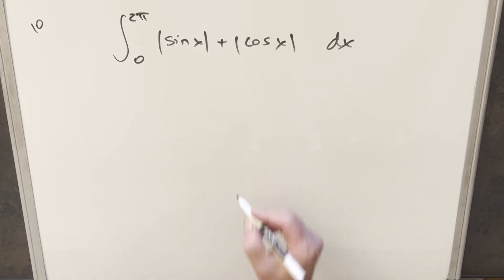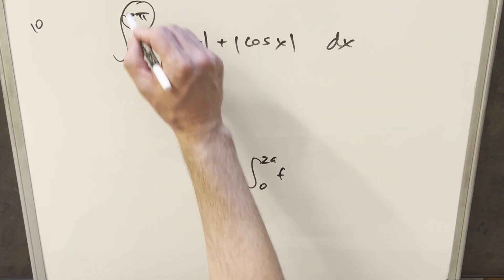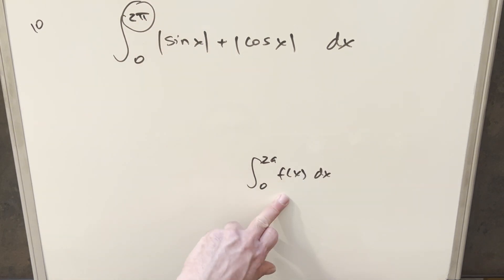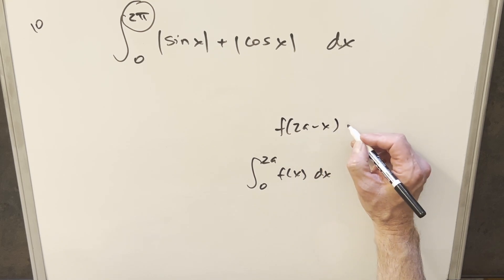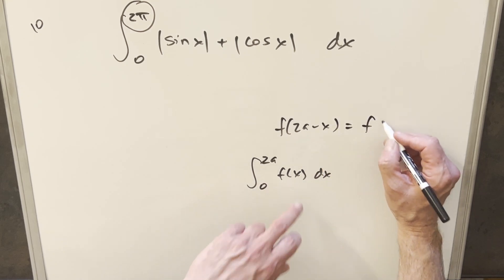So what I want to do instead is use this principle of integration where if we have some integral f of x from 0 to 2a, where like in our case, we've got the 0, like our 2a is going to be 2π. If our integral is this and we check the value of f of 2a minus x, if this is equal to, if we just get back our f of x,